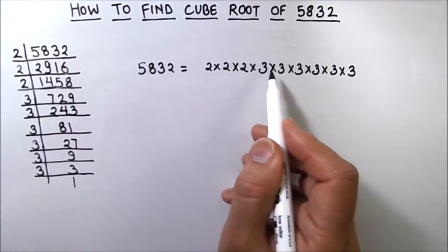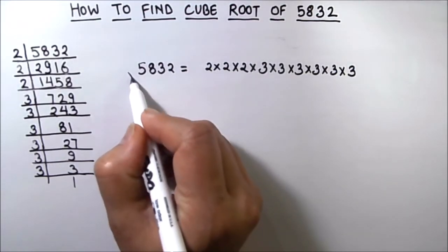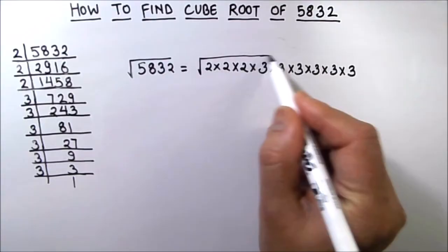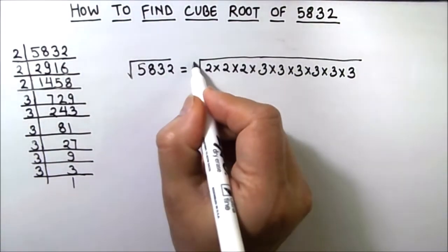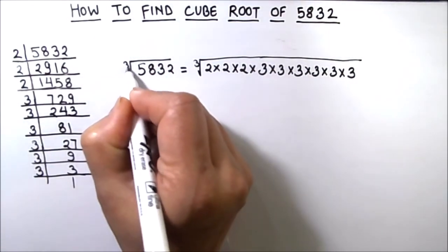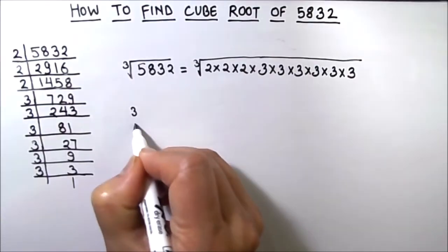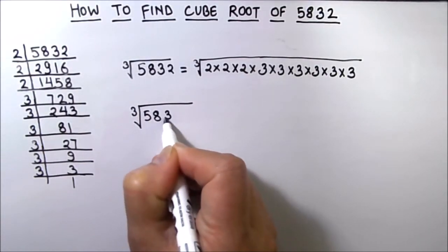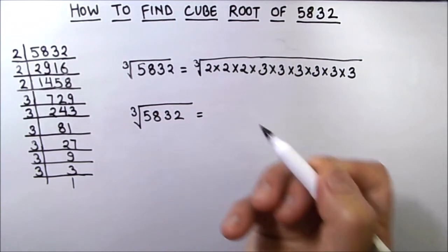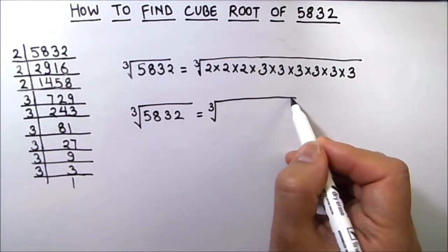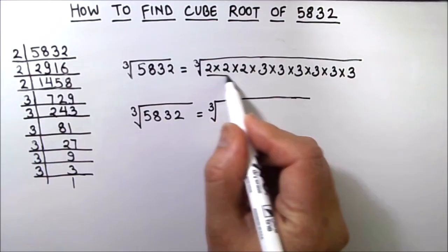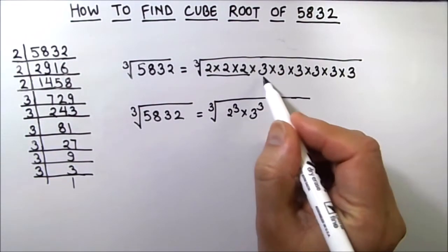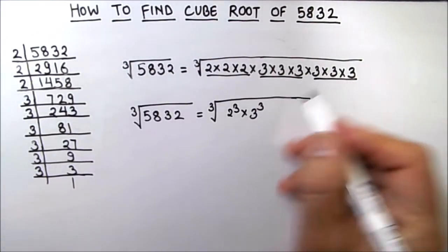So now we have written 5832 as a product of its factors. As we are finding the cube root, we will take the cube root on both sides. So the cube root of 5832 is equal to — we can write these numbers as cubes — this is 2 cubed times 3 cubed times 3 cubed.